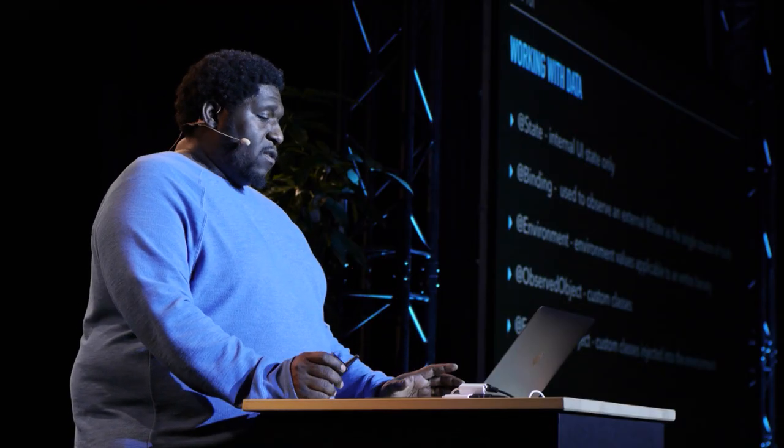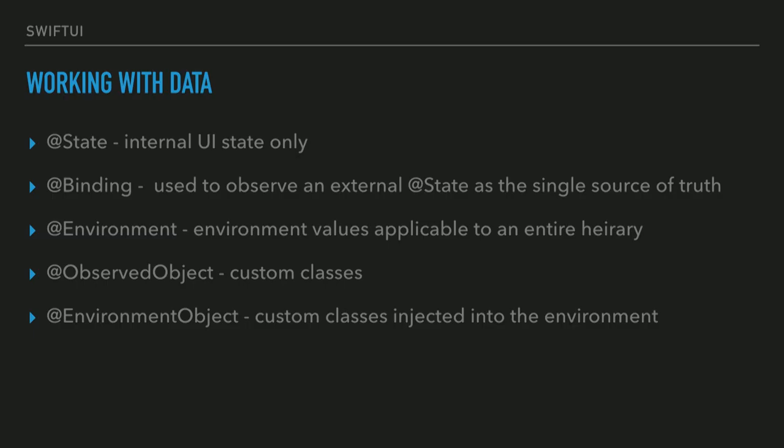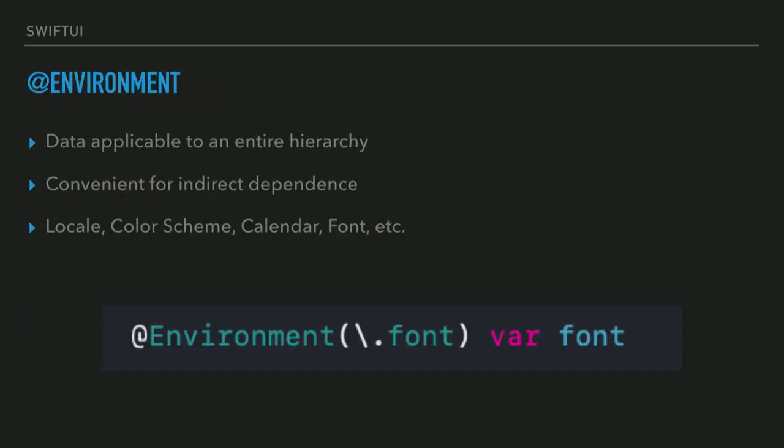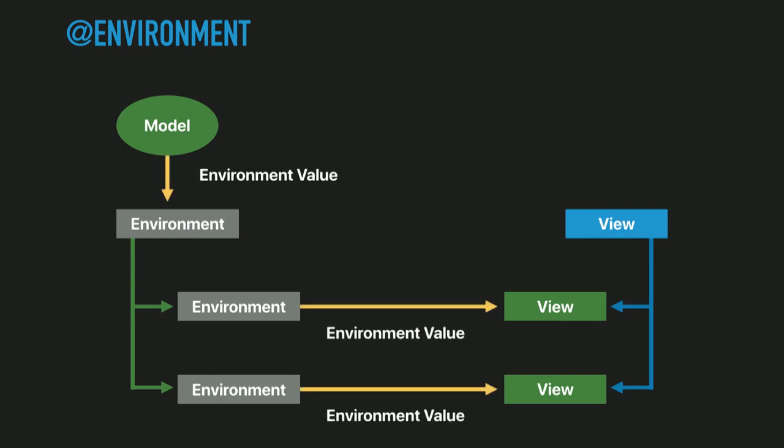The next property wrapper is Environment. The environment in SwiftUI is a lot like the trait collection in UIKit. It contains a set of environment values — like locale, calendar, color scheme, and font — which are available to every view without having to be explicitly passed in. In SwiftUI, we have a view hierarchy much like UIKit, but we also have an environment hierarchy parallel to it. When an environment value changes from an ancestor, that change is propagated down to the child and becomes available to the corresponding view.